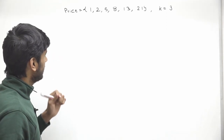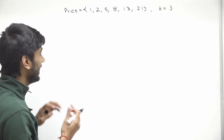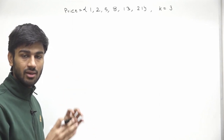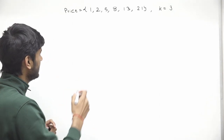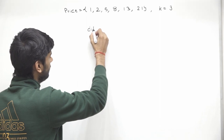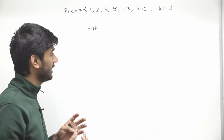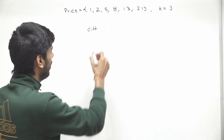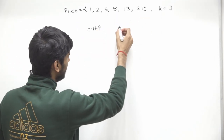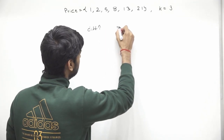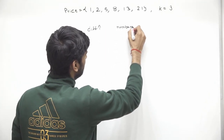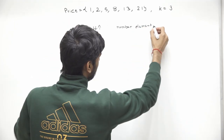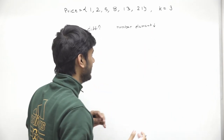Our answer depends on the minimum difference of any two candies we put in the basket. If we increase the minimum difference we require, the number of candies we can pick from the array will actually decrease. Let's take an example to see this.